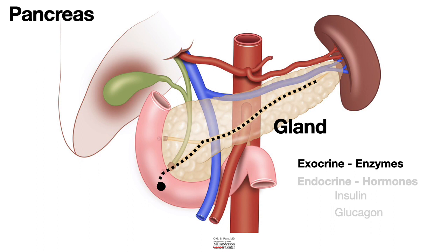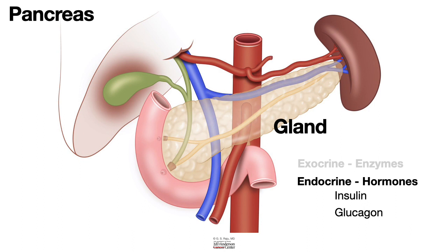As you eat, blood sugars go up, and blood sugar control is by the endocrine function of the pancreas — the islet cells, which secrete hormones that enter the bloodstream. These hormones are insulin and glucagon. The majority of the insulin- and glucagon-secreting islet cells are located in the tail and body of the pancreas. They enter the liver via the splenic vein and are ready when you eat a big meal to help maintain glucose levels in the body. I hope this is useful. Thank you.